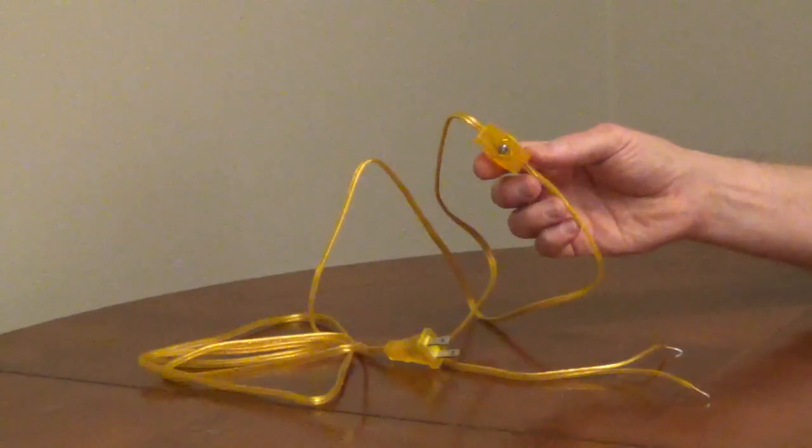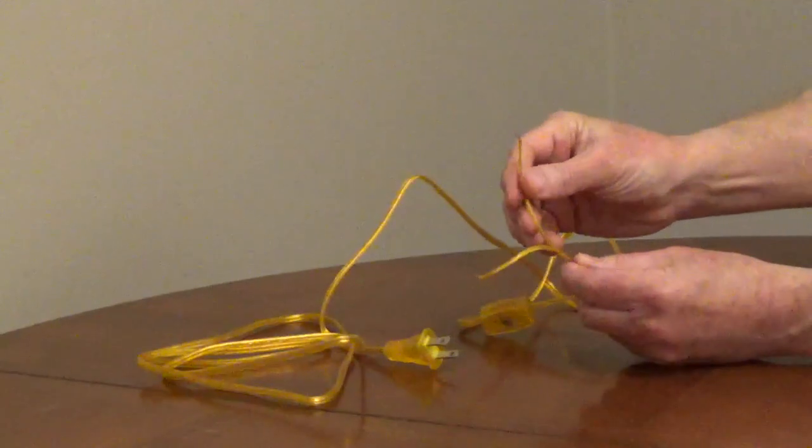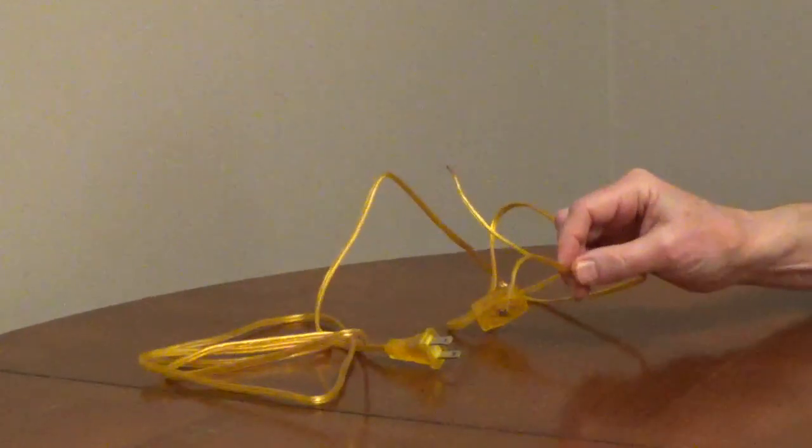The neutral wire will have ribbed insulation. If it's difficult to feel the ribbing, use a multimeter set to test for continuity.